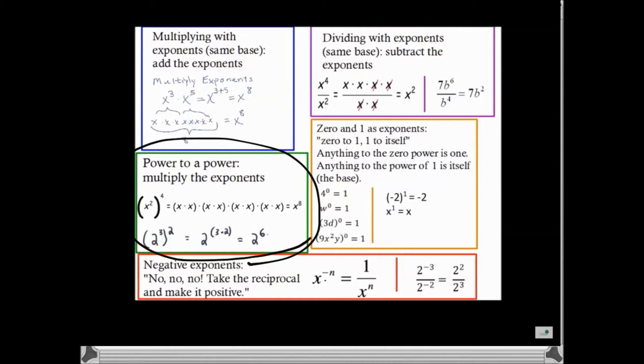In the example on the screen now, we have x squared to the 4th, which means we have x squared 4 times. And if you have x squared 4 times, you have a total of 8 x's. Therefore, the answer is x to the 8th.